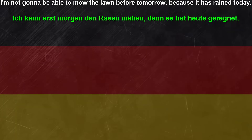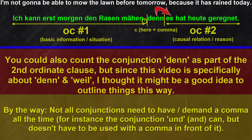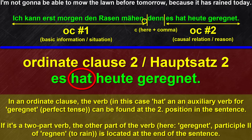Another important aspect: how can you tell an ordinate clause from a subordinate clause? Good question. Let's take a look at an exemplary sentence for the conjunction 'denn': 'Ich kann erst morgen den Rasen mähen, denn es hat heute geregnet.' The second sentence, after the comma, is another ordinate clause. You can see that one part of the verb — 'hat' — can be found in the second position, and the other part can be found at the end of this ordinate clause.